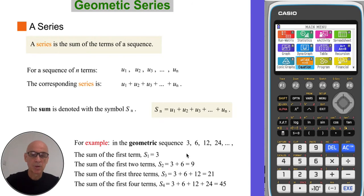In the example shown here, S1 represents the sum of the first term, so it's equal to three. S2 represents the sum of the first two terms, so it's equal to nine. S3 represents the sum of the first three terms, which is equal to 21.